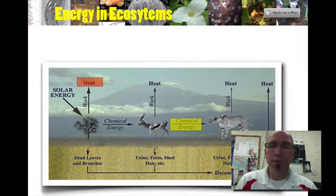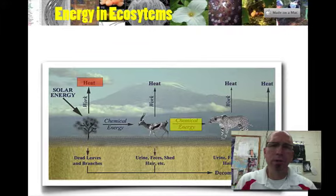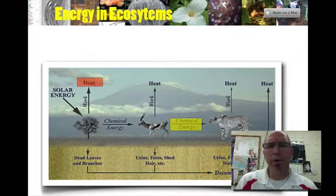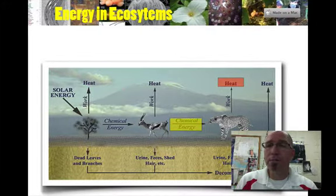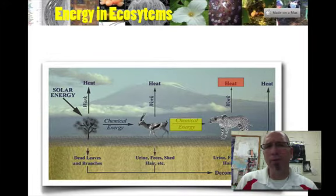You'll also see that there's some heat involved. There's a lot of energy that's just lost as heat. Organisms are not very efficient. Heat is lost by the trees, heat is lost by the gazelle, heat is lost by the cheetah. So energy winds up going a lot of different ways.